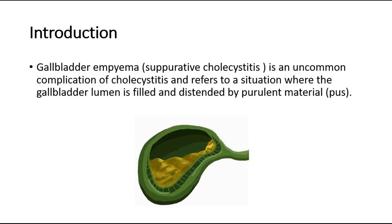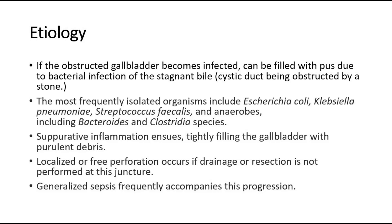Gallbladder empyema, also called suppurative cholecystitis, is an uncommon complication of cholecystitis, and refers to a situation where the gallbladder lumen is filled and distended by purulent material, which is pus. If the obstructed gallbladder becomes infected, it can be filled with pus due to bacterial infection of the stagnant bile, due to the cystic duct being obstructed by a stone.